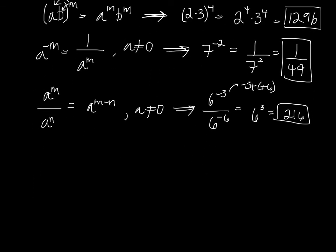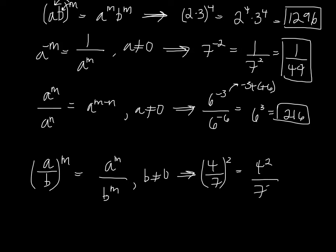Finally, we have our quantity a divided by b raised to the m. Once again, the m distributes. We have a to the m divided by b to the m, when b is not 0. We have 4/7 squared, which is the same thing as 4 squared over 7 squared, which is 16 over 49.